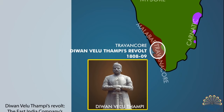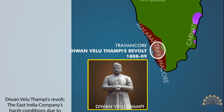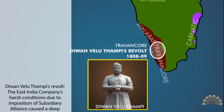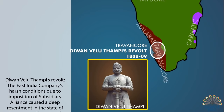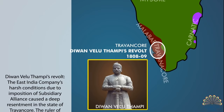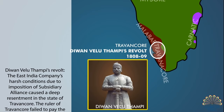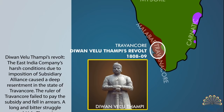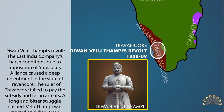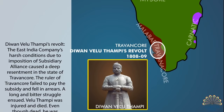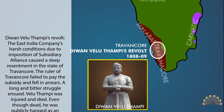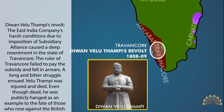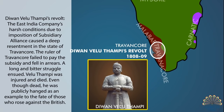Diwan Velu Thampi's Revolt: The East India Company's harsh conditions due to imposition of subsidiary alliance caused deep resentment in the state of Travancore. The ruler of Travancore failed to pay the subsidy and fell in arrears. A long and bitter struggle ensued. Velu Thampi was injured and died. Even though dead, he was publicly hanged as an example of the fate of those who rose against the British.